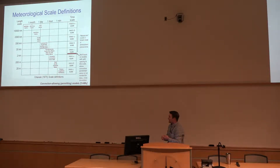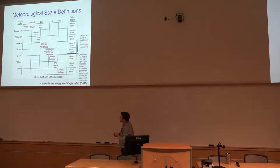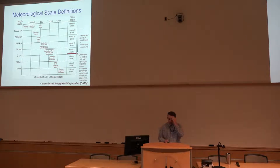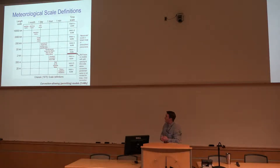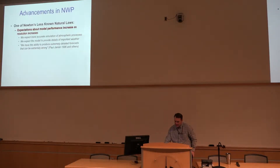You'll see it sometimes in the literature as convection-permitting. We have a strong preference at SPC to call it convection-allowing, just because you can say CAM and that's a lot easier. So we're still in the mesoscale — at the bottom end of the meso-gamma scale — where the convection-parameterized models are really resolving things in the meso-beta scale, roughly 20 to 200 kilometers. We're going to go down to 3 to 4 kilometer grid spacing and resolve some of the meso-gamma scale features and some aspects of deep convection.